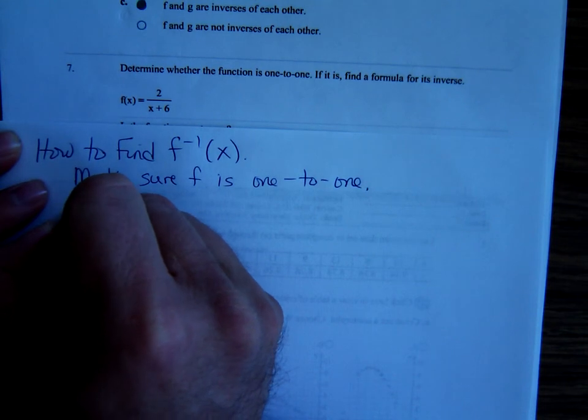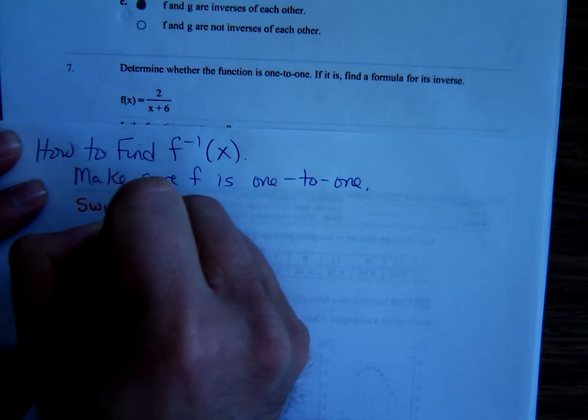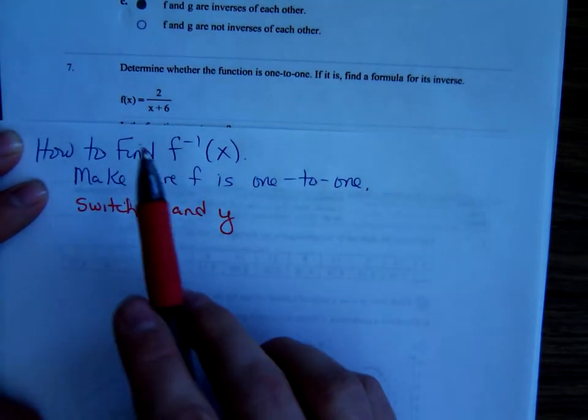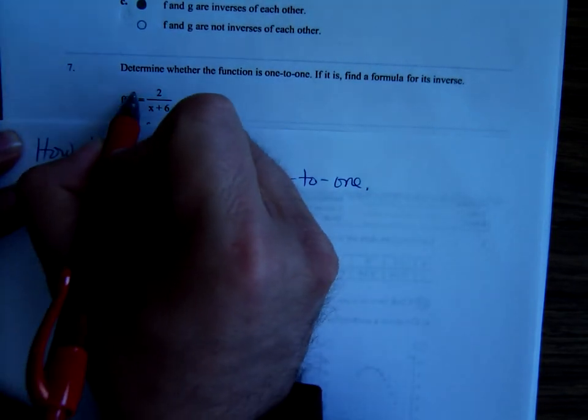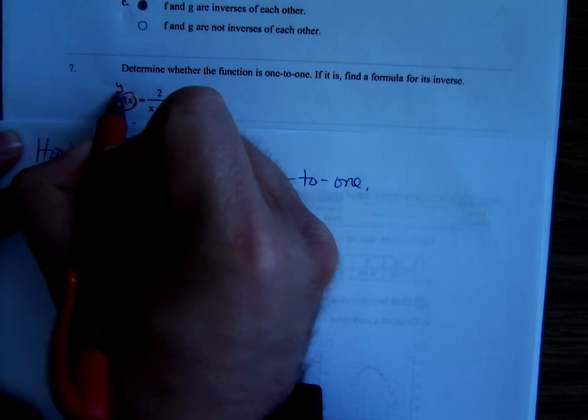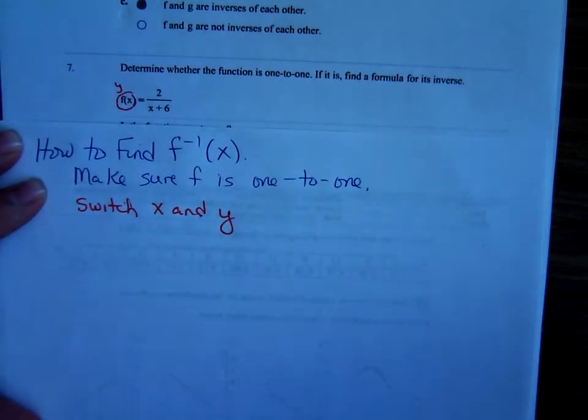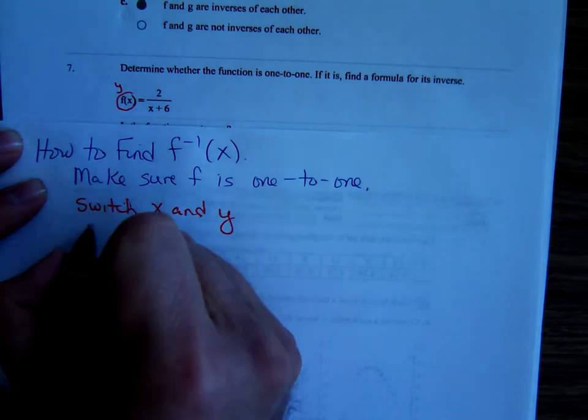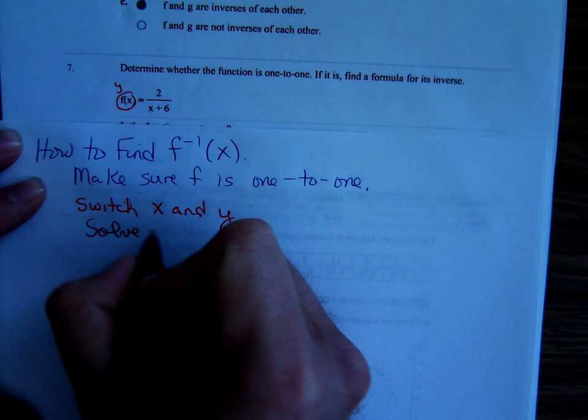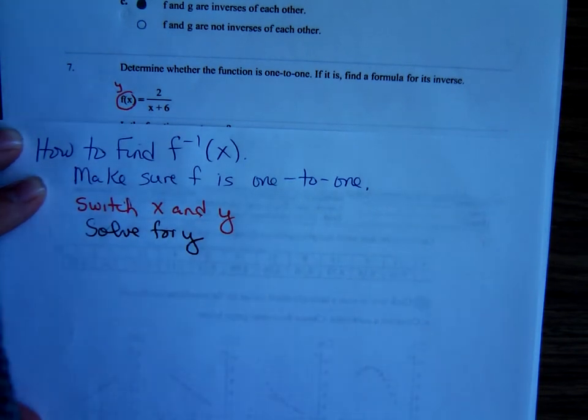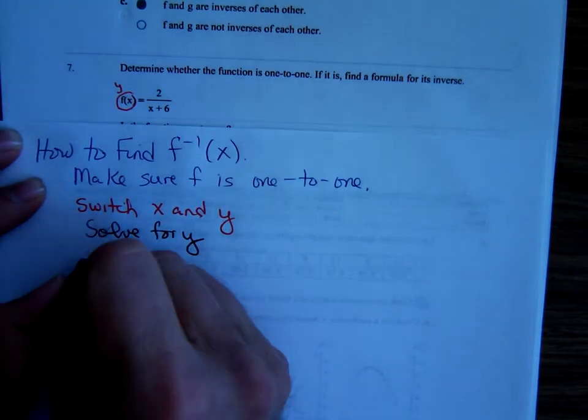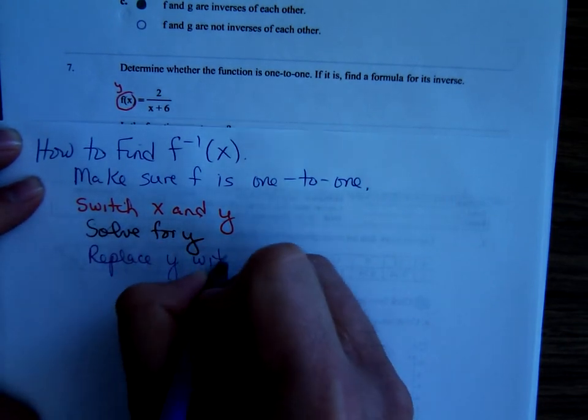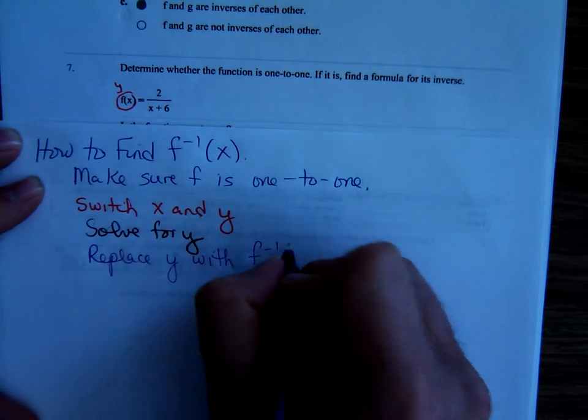Next, we're going to switch x and y. Remember that f of x is the same thing as y. Then, solve for y. That's the thing. This step here is the one that could take a while sometimes. And then replace y with f inverse. Replace y with f inverse.